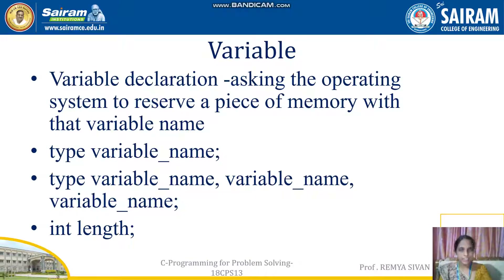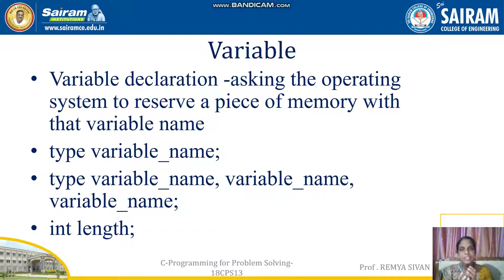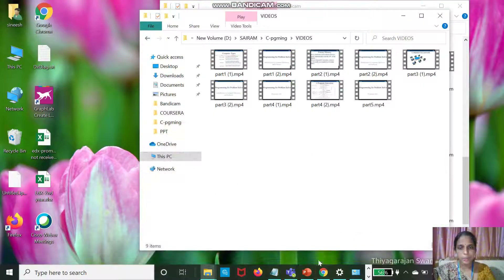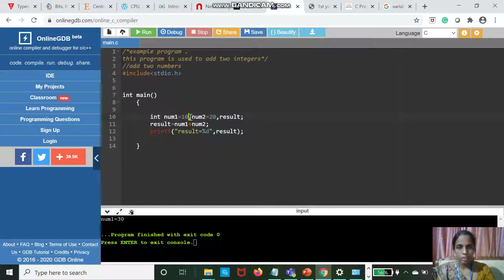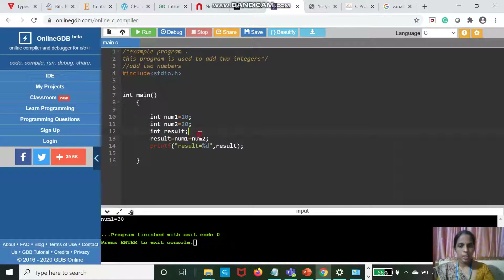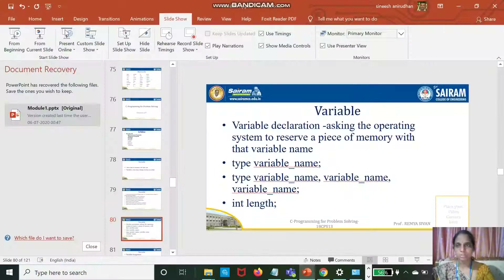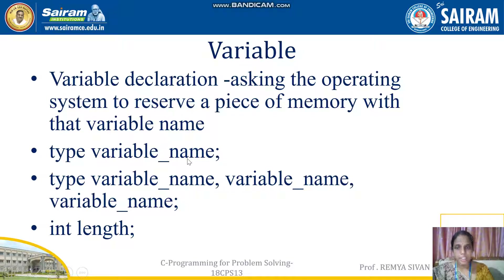Variable declaration is asking the operating system to reserve a piece of memory with that variable name. The syntax for variable declaration is: type variable_name semicolon. There are two ways you can do it — either on different lines, such as int num2; int result;, or on the same line as type variable_name, variable_name, variable_name. What the type is, we will see later.